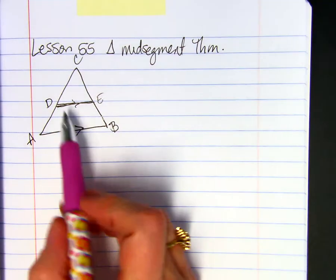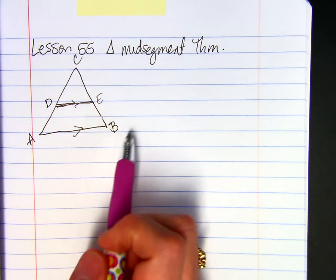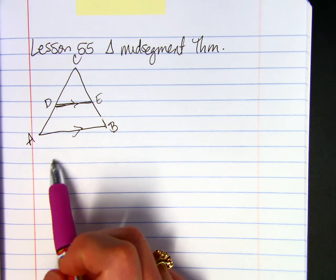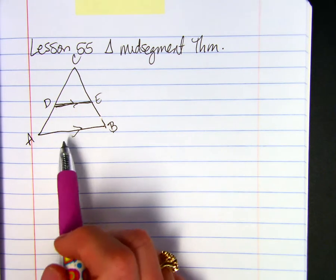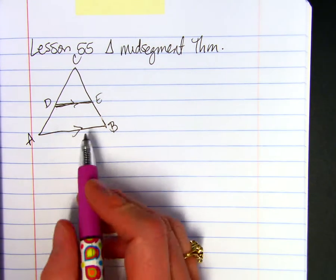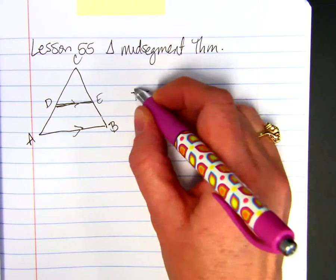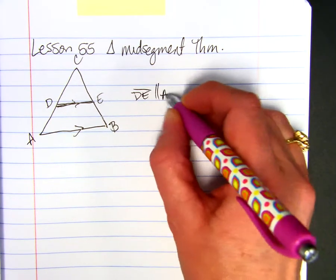If you have a segment drawn through a triangle that is parallel to the third side, then if D, E is parallel to A, B,